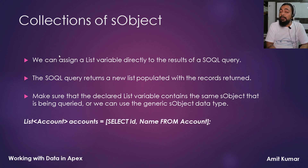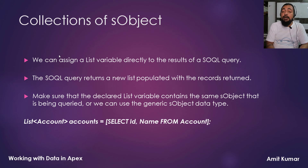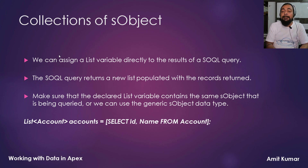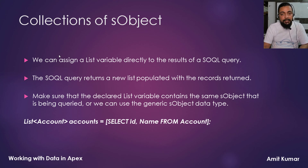Whatever is written within the square brackets is nothing but a SOQL query, and the result of that SOQL query will be a list of records. If you are performing the query on account objects, when you create the list you must declare a list of account. Make sure the data type should match, or alternatively you can use a list of generic SObject, which can hold the result of any SOQL query.